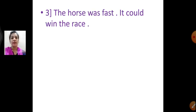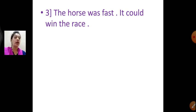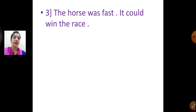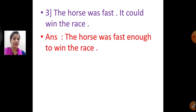Now the third one: 'The horse was fast. It could win the race.' Where are you going to put 'enough'? Yes, in the first statement — 'the horse was fast enough'. You are not going to use the pronoun or the word 'could'; instead use 'to'. So the answer is: 'The horse was fast enough to win the race.'